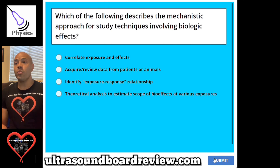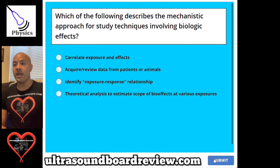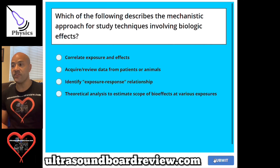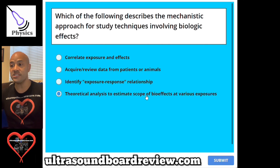Question 82. Which of the following describes the mechanistic approach for study techniques involving the biologic effects? A, correlate exposure and effects. B, acquire review data from patients or animals. C, identify exposure response relationship. Or D, theoretical analysis to estimate scope of bioeffects at various exposures. The answer is D, theoretical analysis to estimate scope of bioeffects at various exposures.